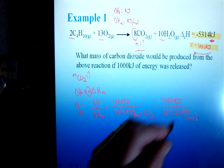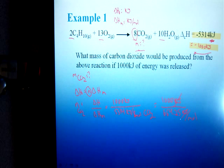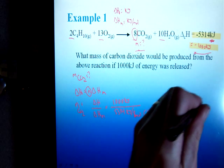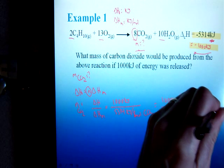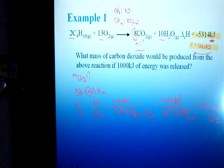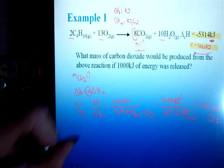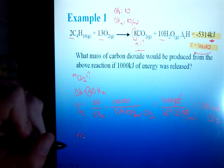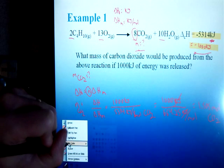When we do that math, the kilojoules end up cancelling out. I'm going to end up with 1.505 moles of carbon dioxide. And from there, I can then carry on to convert that into grams.